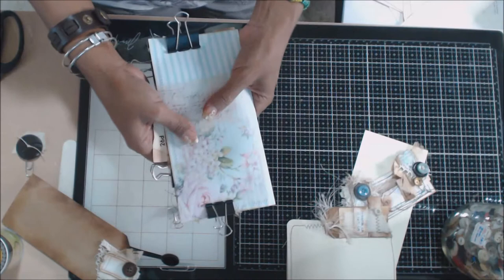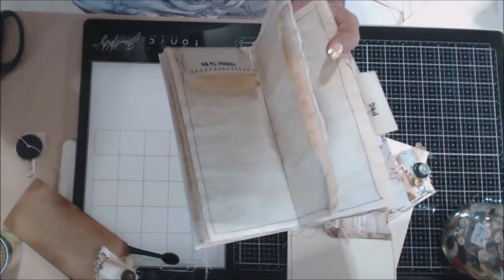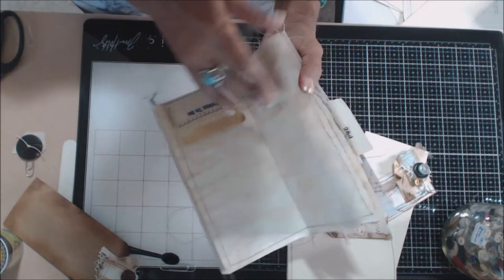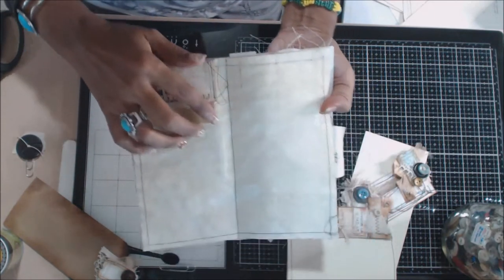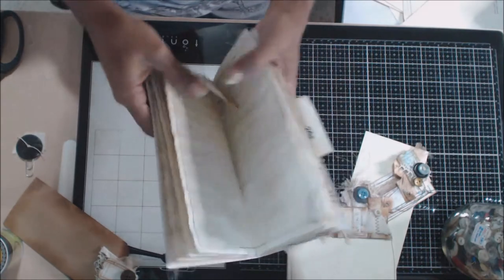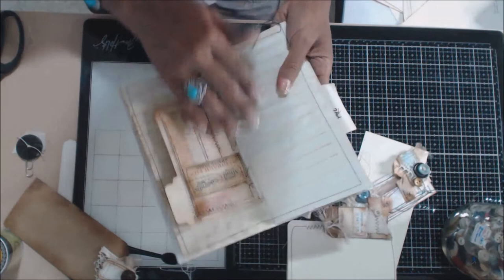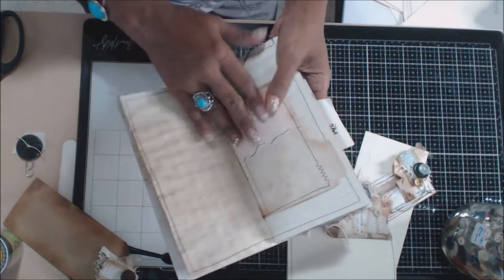So here we are. We have that little piece there sewn straight down the center of our score line, and you can see it went pretty smoothly. So we're going to do that for all our signature pages.